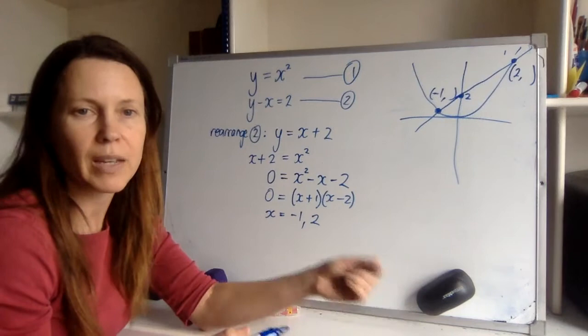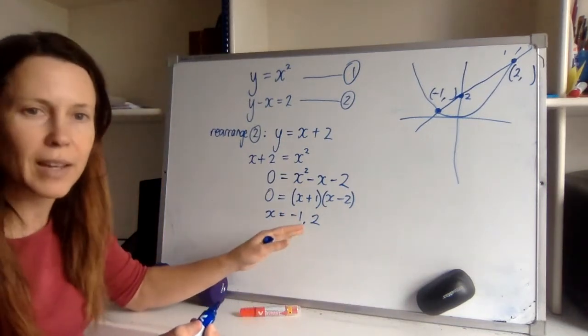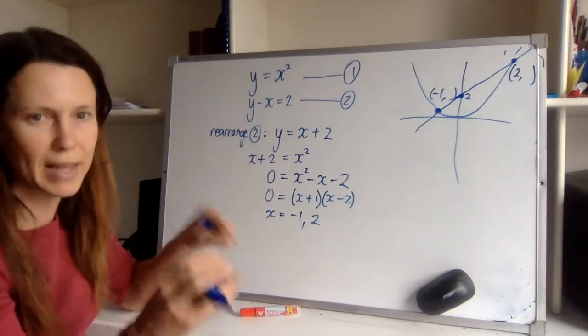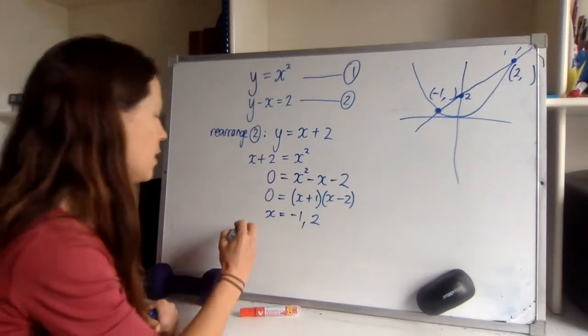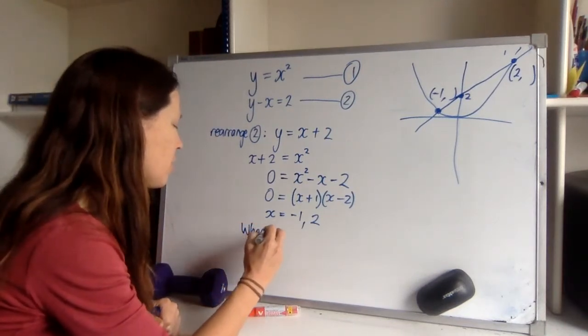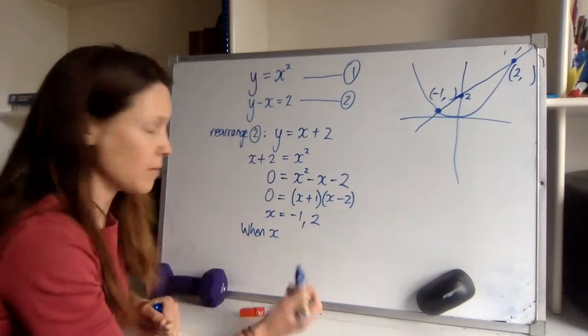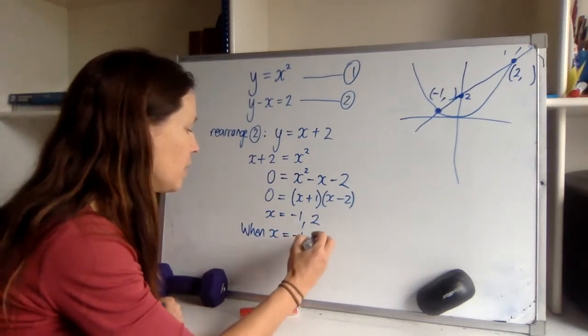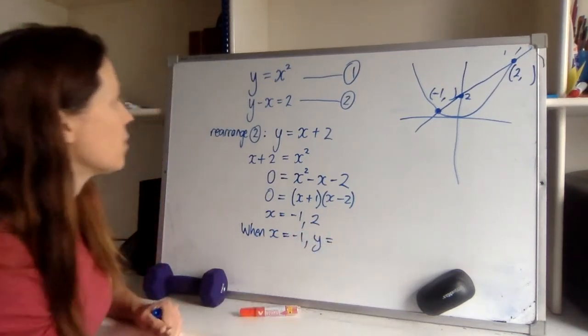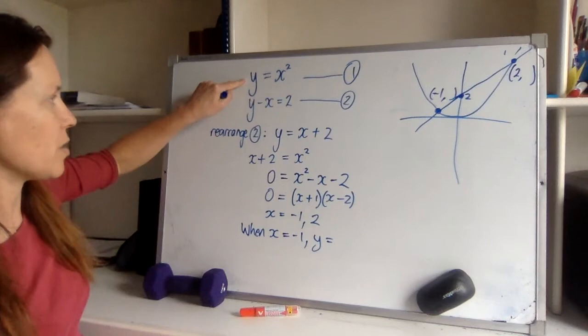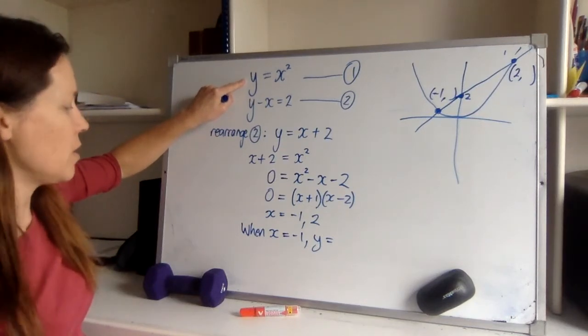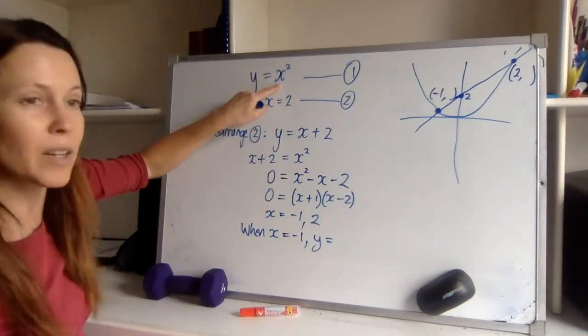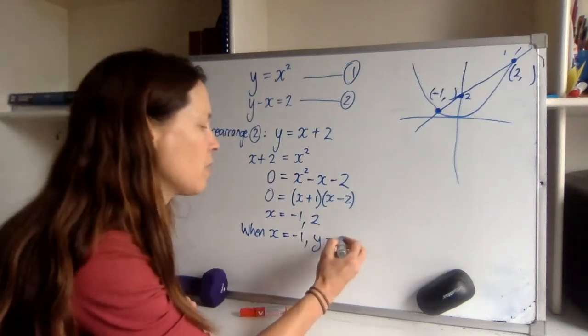So you've got to say when x equals minus one, y equals something, and when x equals two, y equals something. It's not just that you're going to have two answers for x and two answers for y, it's two pairs of answers that have to go together. So that's quite easy to show with your working just by writing that word when. When x equals minus one, y equals, let's toss it into this equation. So all we need to do is square negative one, negative one times negative one is one. Does that make sense to my graph? Yep, that seems fine.